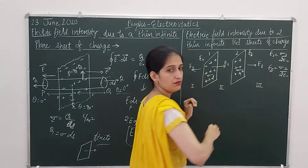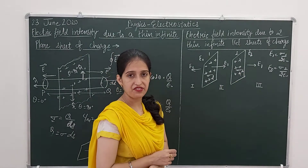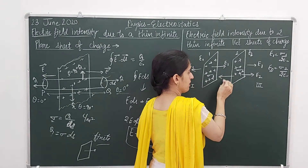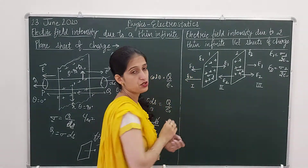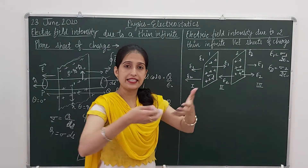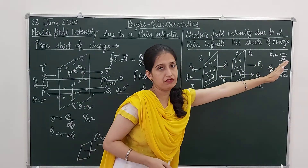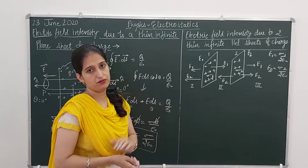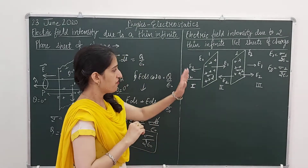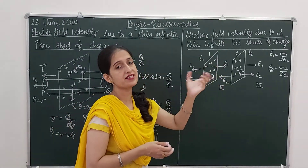Because the sheet is positively charged, electric field lines are outward from the sheet. Similarly, E2 due to sheet 2 is also outward in all three regions. So we have three regions: Region 1 and Region 3 are the extreme positions outside the sheets, and Region 2 is the region in between the sheets. We will find out the net electric field due to both sheets in all three regions.